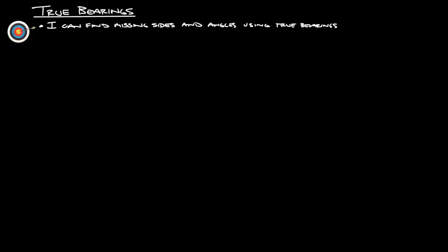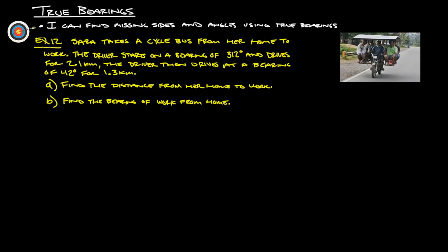Last example here, example 12. Sarah takes a cycle bus from her home to work. The driver starts on a bearing of 312 degrees and drives for 2.1 kilometers. Then the driver drives at a bearing of 42 degrees for 1.3 kilometers. Find the distance from her home to work and then find the bearing of work from home. First thing we're going to want to do is we're going to want to draw ourselves a picture. So we started right here, here's the start.